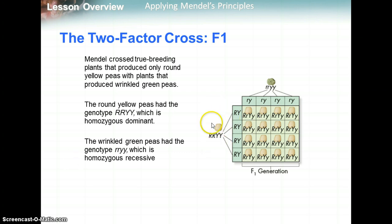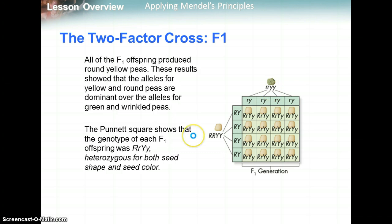Mendel crossed true-breeding plants that produce only round yellow peas with plants that produce wrinkled green peas. The true round yellow plants are big R big R big Y big Y, and the true breeding green wrinkled plants are little r little r little y little y. All the F1 produced round yellow peas, proving that round and yellow traits are dominant. The Punnett square shows the F1s are all heterozygous for each trait — big R little r and big Y little y.